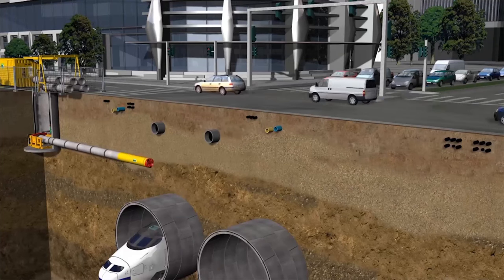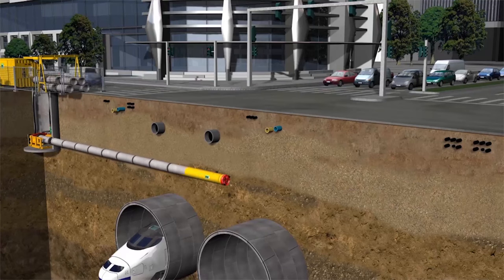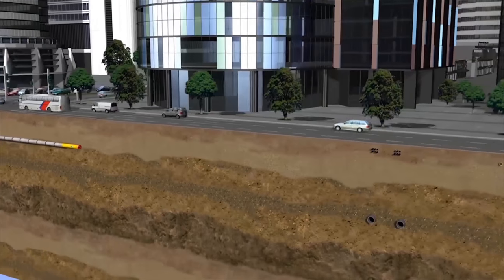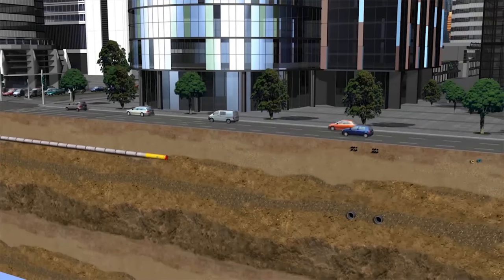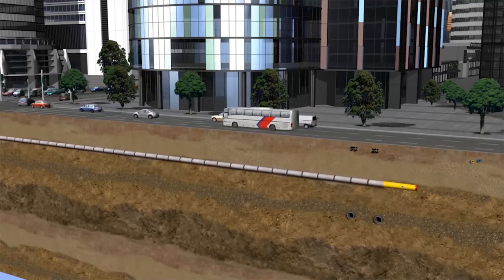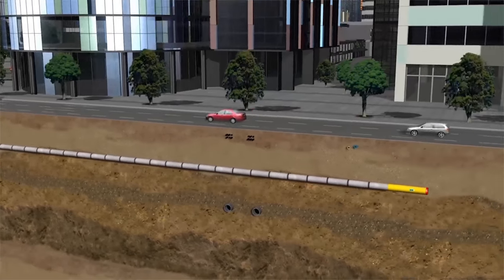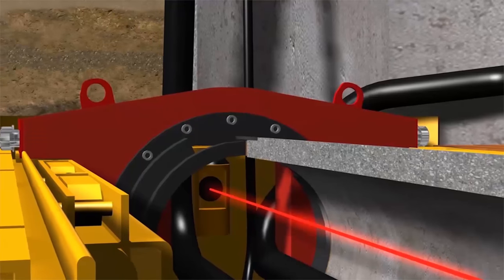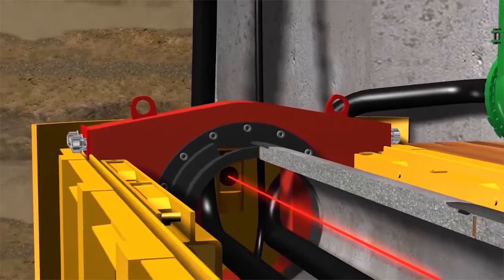Crossing pipes and buildings are no problem with this technique, as they can be easily overpassed or undercrossed. The machine arrives in the reception shaft exactly at the planned coordinates.